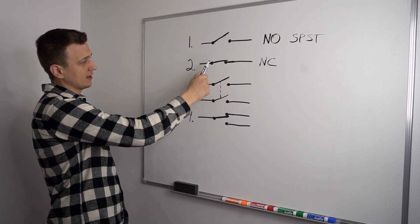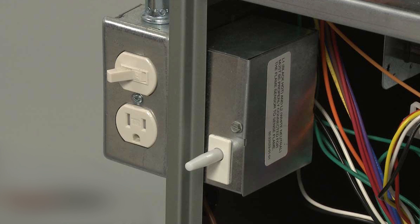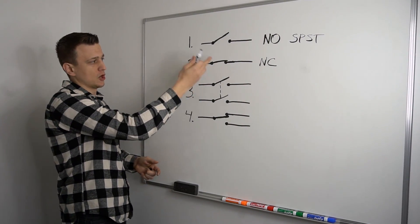And this switch right over here, that's in the normally closed position. An example of that would be the interlock, or the door switch on a furnace. This is a normally closed switch. But if you pull the furnace door off, that switch opens up.